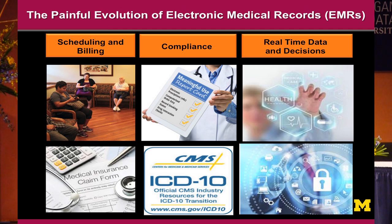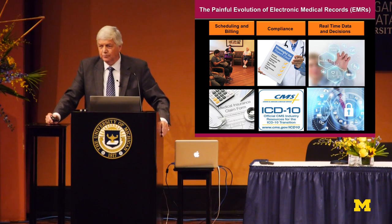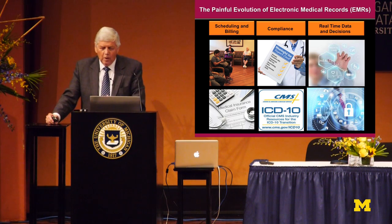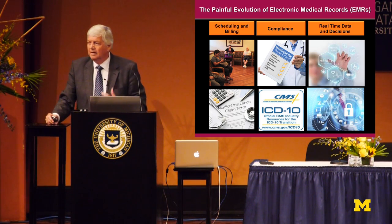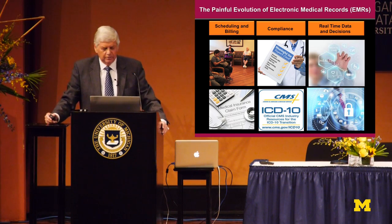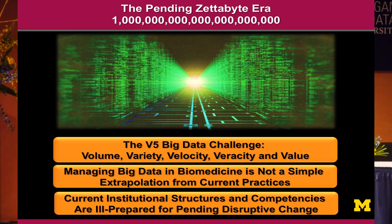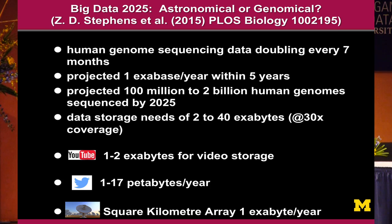The painful evolution of electronic medical records — for the most part, the first epoch was merely to do with scheduling and billing. Now, under the HITECH Act and the Office of the National Coordinator, we've moved to compliance. On October 1st, we moved to ICD-10. But it's what's going to be the trajectory where we can make this data real-time and actionable for the best clinical decisions. Because once again we get into V5 territory: 10 to the 21, the zettabyte era, probably awaits at least within some nominal trajectory of 10 to 15 years. But most importantly, current institutional structures and competencies are very ill-prepared for this.